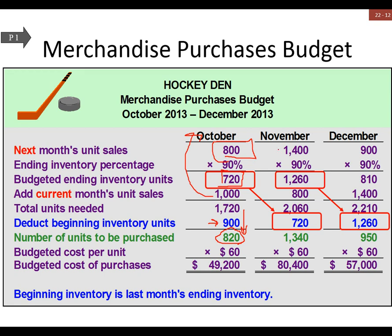The $1,400 is actually next month's — December's — sales at 90%, giving us budgeted ending inventory to prep us at the end of November for December. The $800 is our actual November sales, giving us total units needed. We subtract out the ending inventory computed last month, get total units needed, then multiply by the unit cost of inventory — $60 — to get our total budgeted amount in dollars for the month. That's how it steps through the months depending on our assumptions.